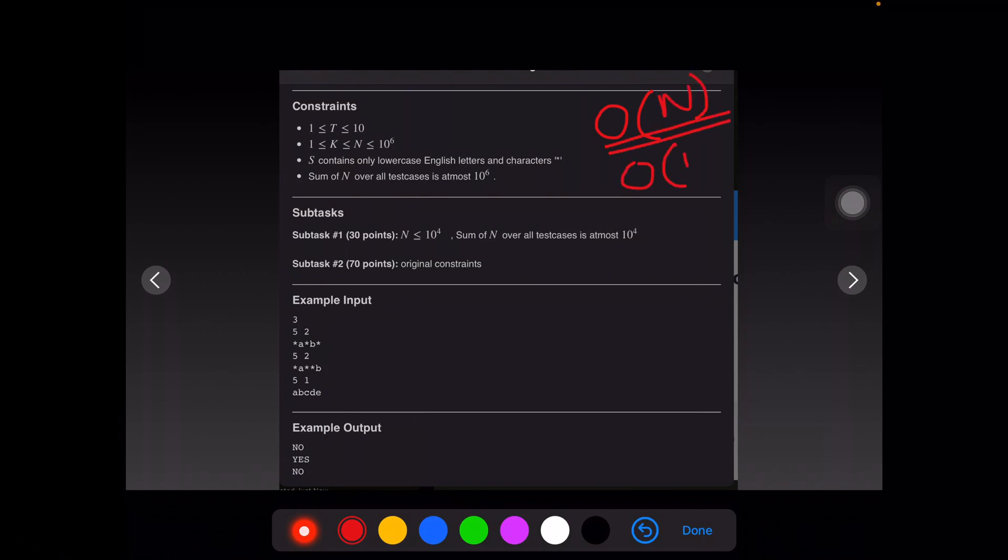It can't go to order of n square because that would give you a TLE in this question. You'll have to restrict yourself to order of n or probably order of n log n. Let's see what we can do at our level best. Now there are two substars in this given problem.